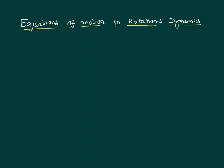Hello everybody. Here we would like to write equations of motion for a body in rotational motion. In translatory motion we have basic equations of motion like V equal to U plus AT, S equal to UT plus half AT squared, and V squared minus U squared equal to 2AS. In these equations, U is initial velocity, V is final velocity, A is acceleration, T is time, and S is displacement.